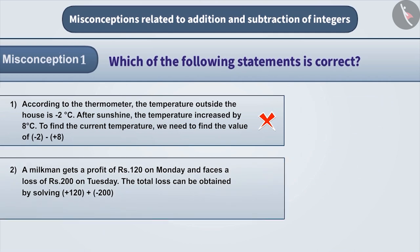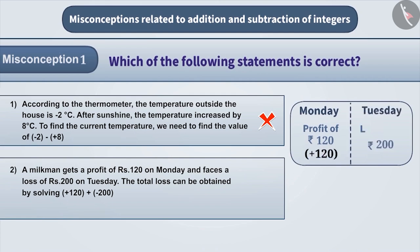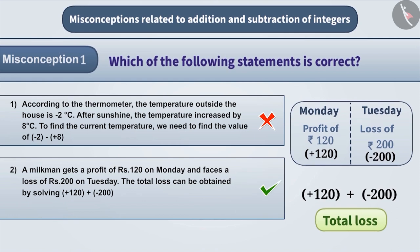In the second statement, a milkman gets a profit of Rs. 120 on Monday and it's expressed as plus 120. Similarly, he faces a loss of Rs. 200 on Tuesday. As we need to find the total loss, we will add plus 120 and minus 200. Therefore, the second statement is correct.